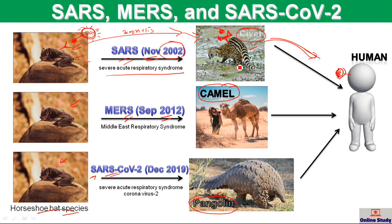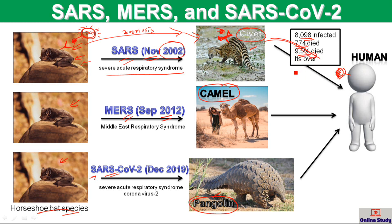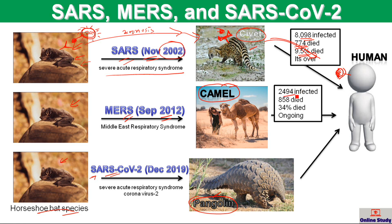So far, SARS has infected 8,098 people, among whom 774 died — a fatality rate of approximately 9.5%. The MERS virus has infected 2,494 people, with 858 deaths, giving a fatality rate of 34%. The MERS pandemic is not over and is still ongoing.